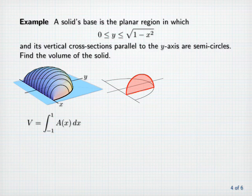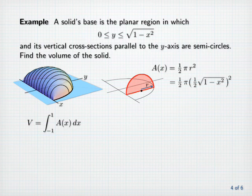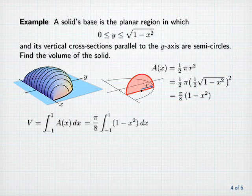Note that the radius r is half the length of the cross-section's bottom edge. That edge length is just the y-coordinate of the top half of the unit circle, which is the square root of one minus x squared. So A of x is equal to one-half pi times the square of one-half the square root of one minus x squared, or pi over eight times one minus x squared. So the volume of the solid is pi over eight times the integral from minus one to one of one minus x squared dx.